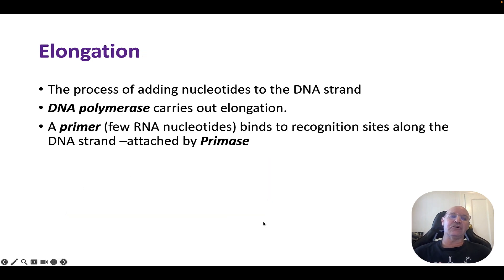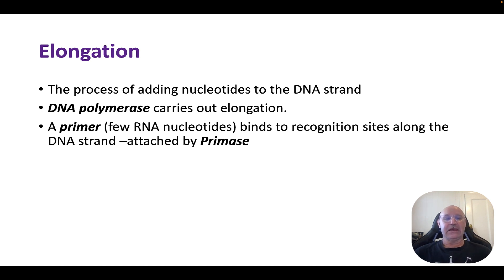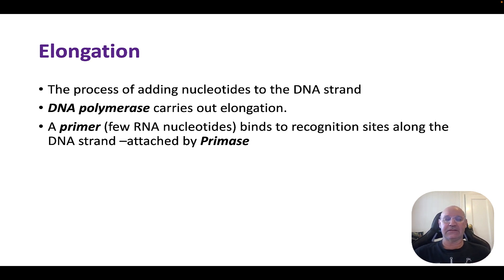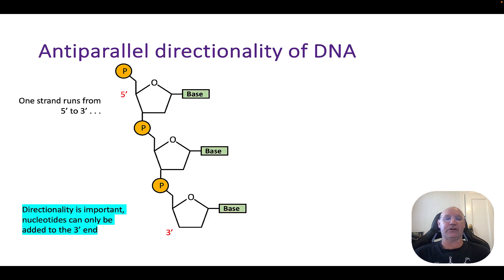Elongation is the process of adding new nucleotides to the DNA strand, producing the daughter strand, and that's facilitated by an enzyme called DNA polymerase. First we have a primer — a few RNA nucleotides — that binds to a recognition site along the DNA strand, attached by another enzyme called primase. That starts the elongation process.